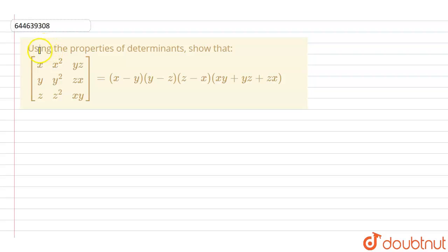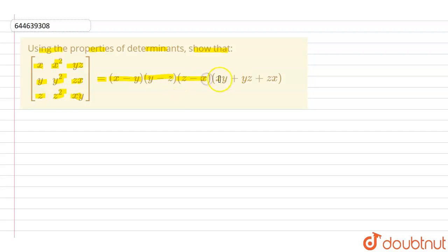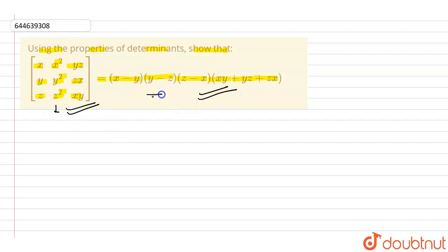In this question, using the properties of determinants, we have to show that the determinant of x, x², yz; y, y², zx; z, z², xy is equal to (x−y)(y−z)(z−x)(xy+yz+zx). Using determinant properties, we need to prove that this LHS value is equal to the RHS value.